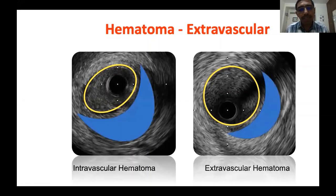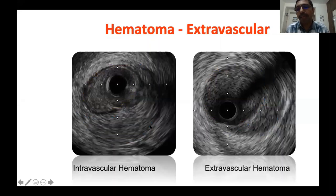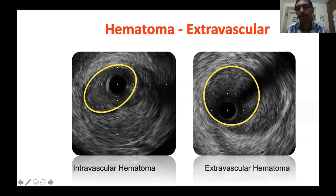Here is the lumen and blood in the intravascular space — that is intramural hematoma. Here is an example of extravascular hematoma: this is your lumen, this is your vessel architecture, there is a breach in the architecture, and blood accumulates in the peri-adventitial space — that is your extravascular hematoma.